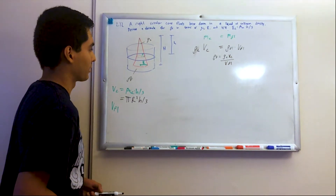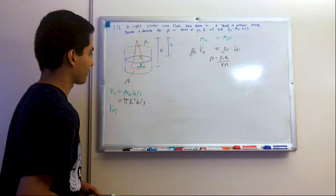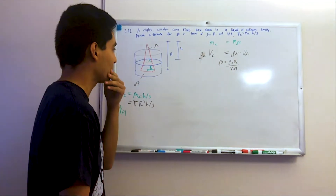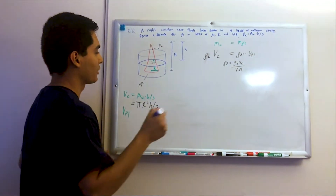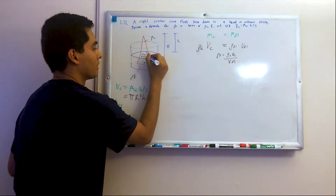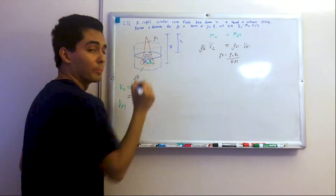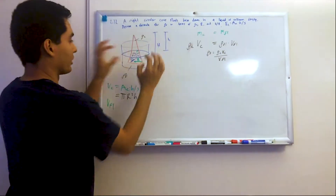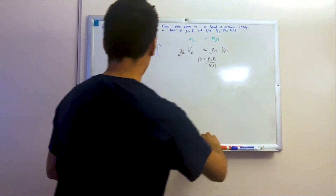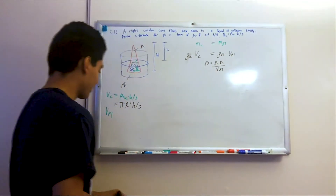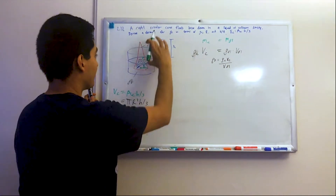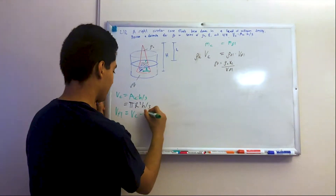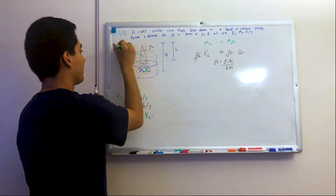The volume of the fluid is going to be this invisible layer of fluid displaced by the object. To get that volume, I need to take the volume of the entire cone minus the volume of this baby cone — I'm going to call it VC prime.